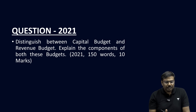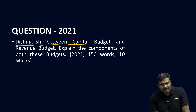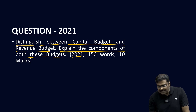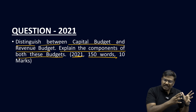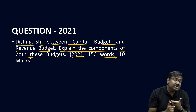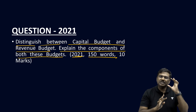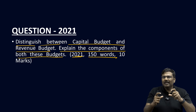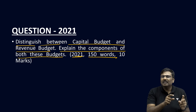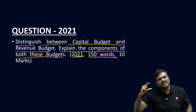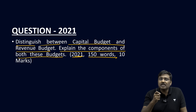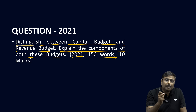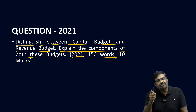A descriptive question in 2021 asked: 'Distinguish between the capital budget and revenue budget. Explain the components of both these budgets.' It was a 150-word question for 10 marks. We have already discussed what is meant by the capital account and revenue account in the budget. You can use all this information and the chart discussed earlier to easily distinguish between capital and revenue accounts in 150 words. These are the kinds of questions UPSC has asked on the chapter of budgeting in both prelims and mains.